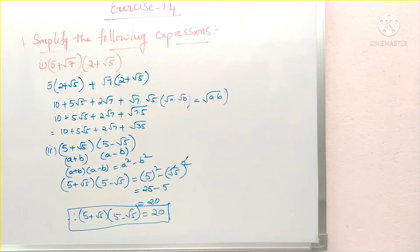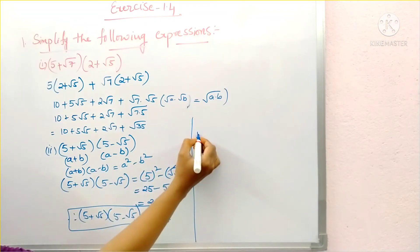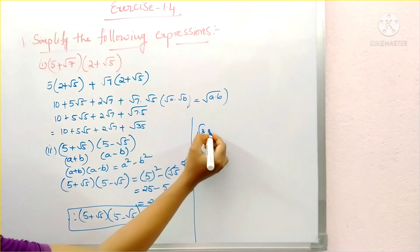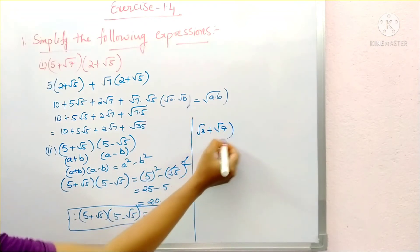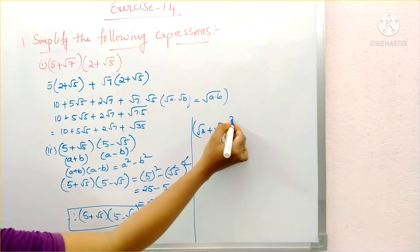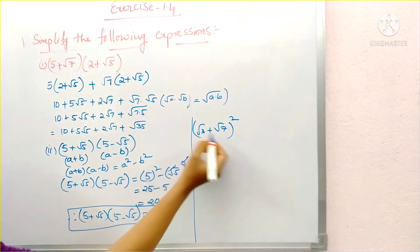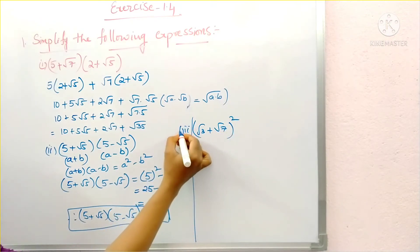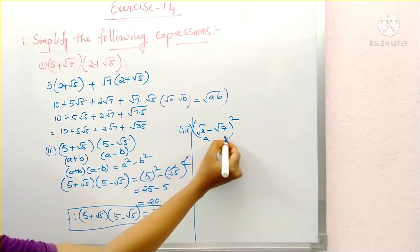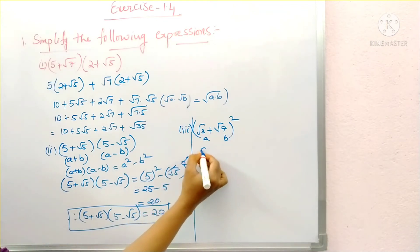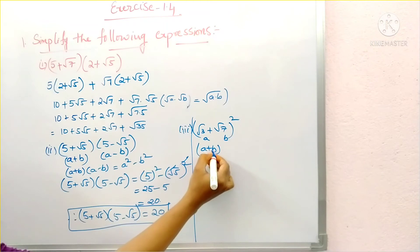Our third problem is root 3 plus root 7 whole square. Looking at this expression, it is in the form of a plus b whole square, where a is root 3 and b is root 7.